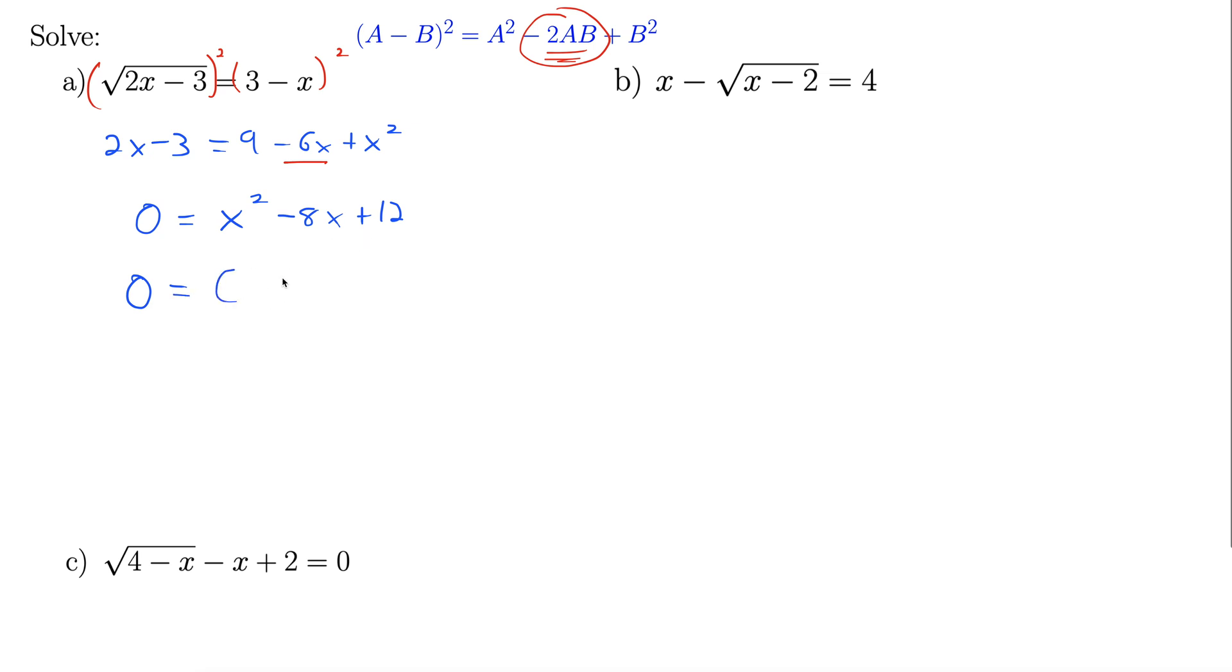So we're looking for factors of 12 that add to negative 8. Factors of 12 that add to negative 8, how about negative 6, negative 2? That does the trick. Now we set each one of these factors equal to 0 and solve. That gives us x equals 6, x equals 2.